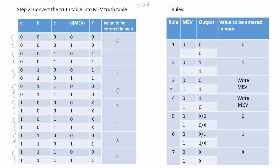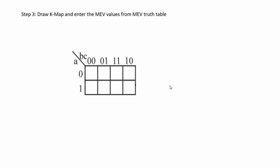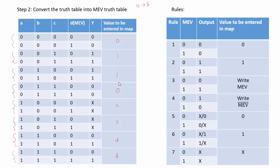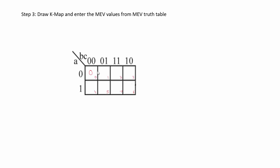Since there are 8 values, we draw a 3-variable K-map with A, B, and C. Step 3 is to draw the K-map and enter the map entered variable values from the MEV table. The K-map entries for cells 0 through 7 are: 0, 1, 1, 0, 0, 1, 1, 0 for the fixed values, followed by don't care, don't care, D, and D for the remaining cells.